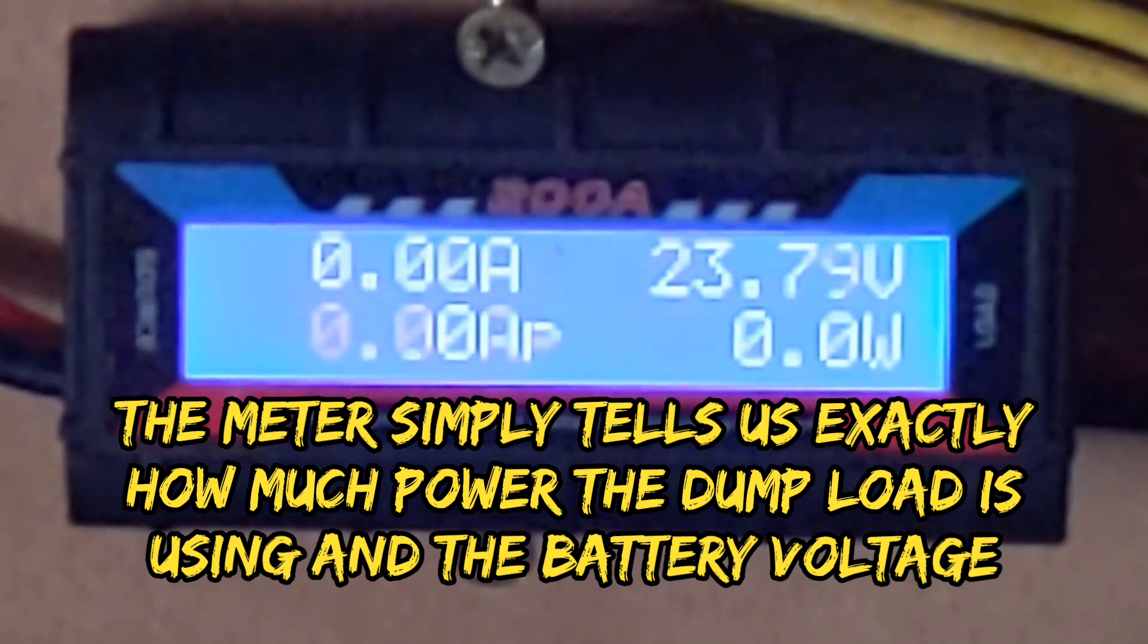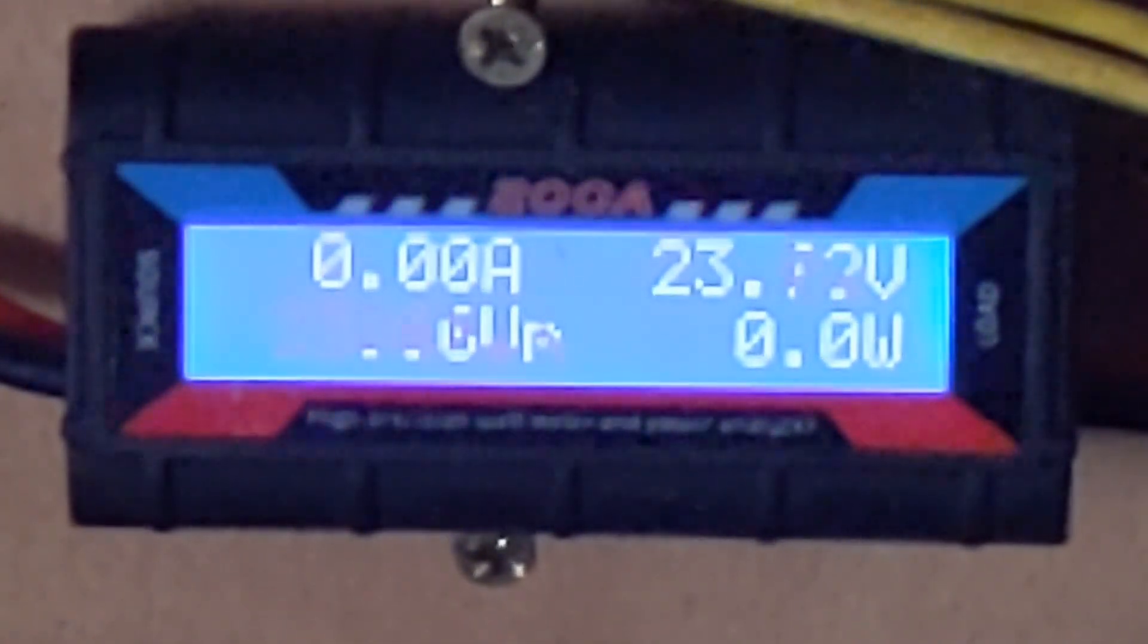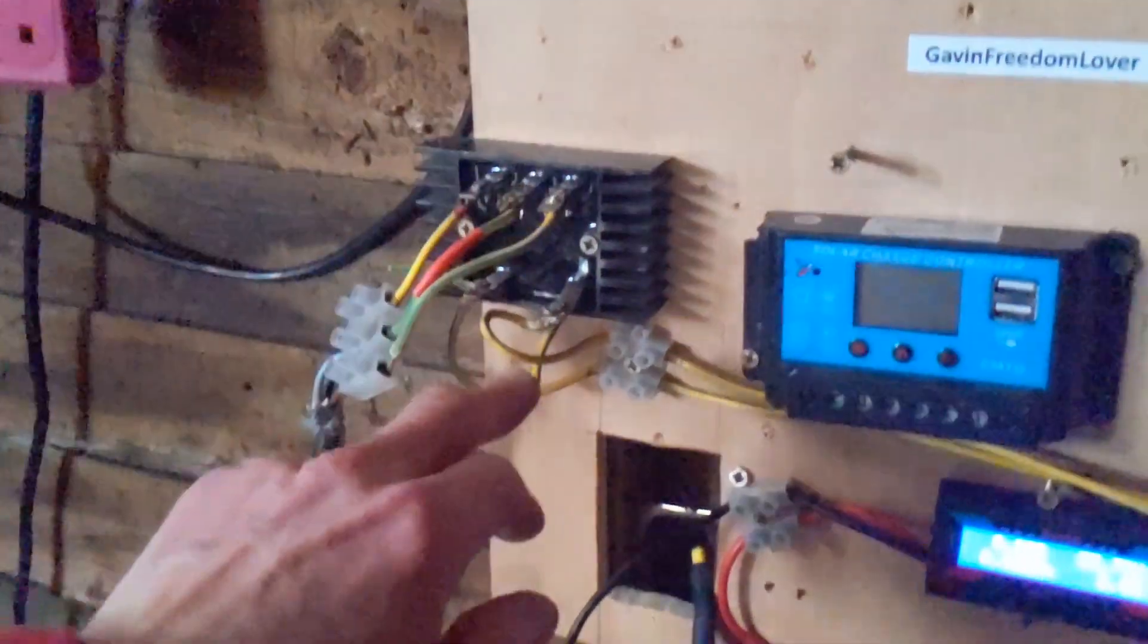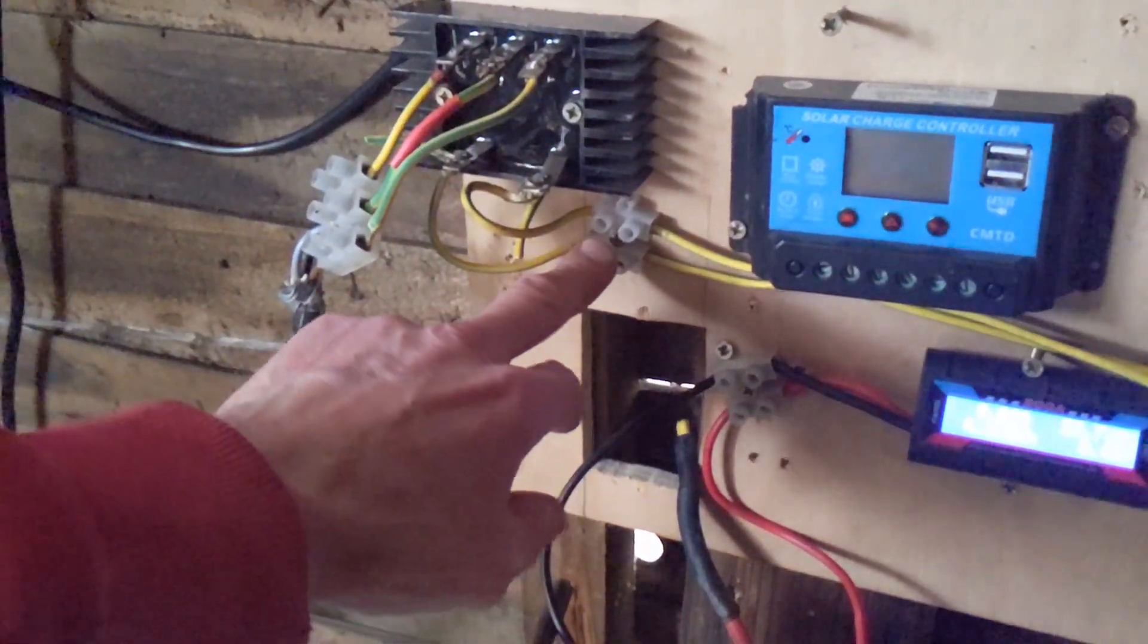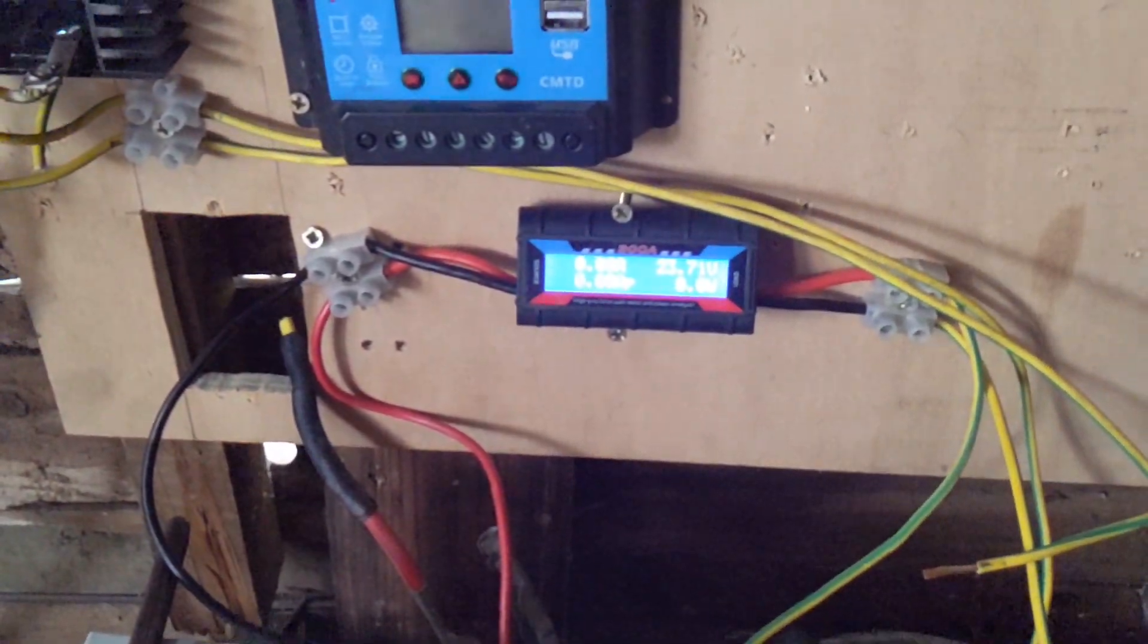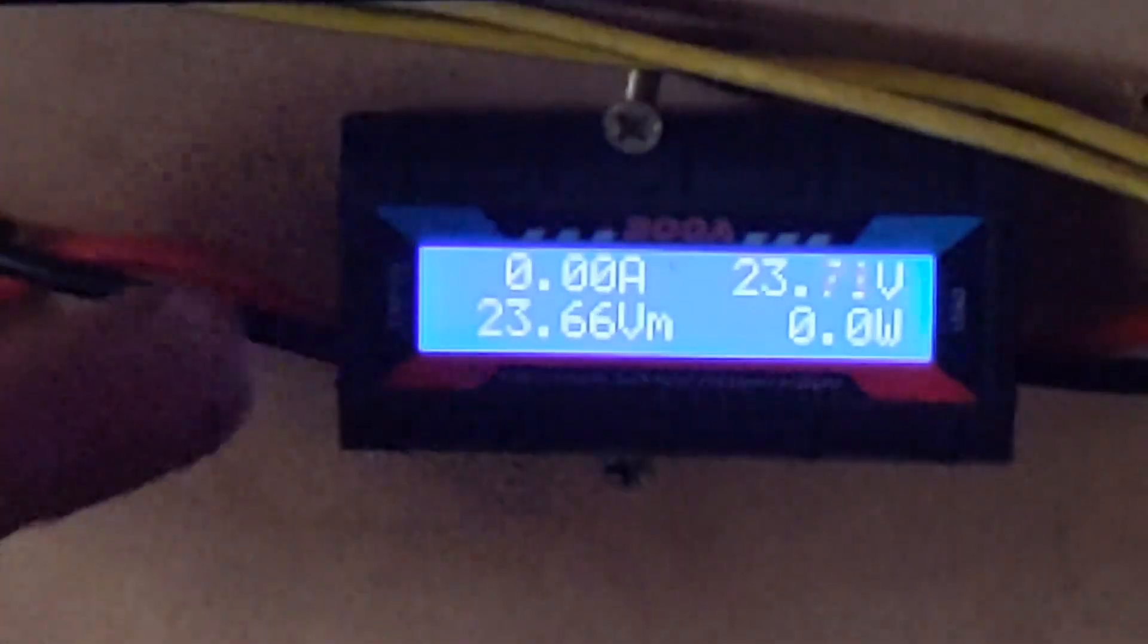This is a different video with regards to how I have this connected. The turbine connects to the rectifier, and the DC output of the rectifier goes straight to the batteries. Then this meter is connected in between the battery and the dump load.